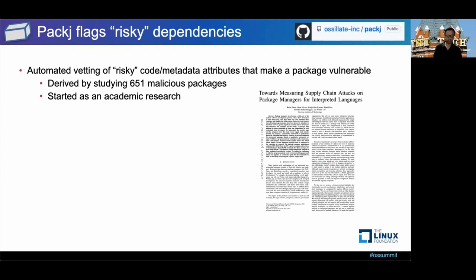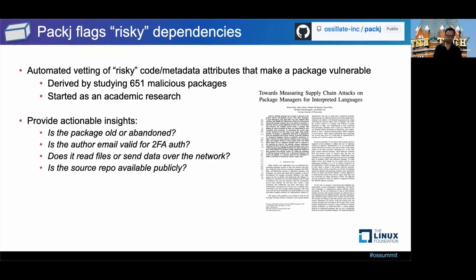We started as an academic research project at Georgia Tech. The tool provides actionable insights into these attributes. For example, we check if the package is old or abandoned — an old or abandoned package can be taken over by an attacker. We check if the author email is valid, whether the package reads files or sends data over the network, and if the source repo is publicly available and correct.